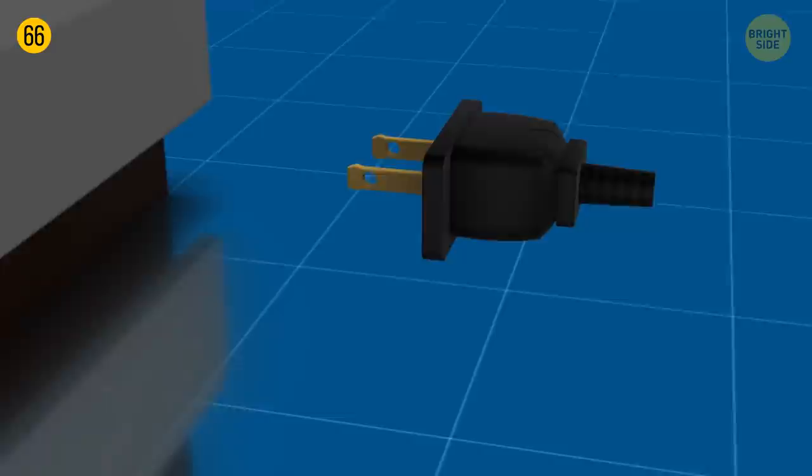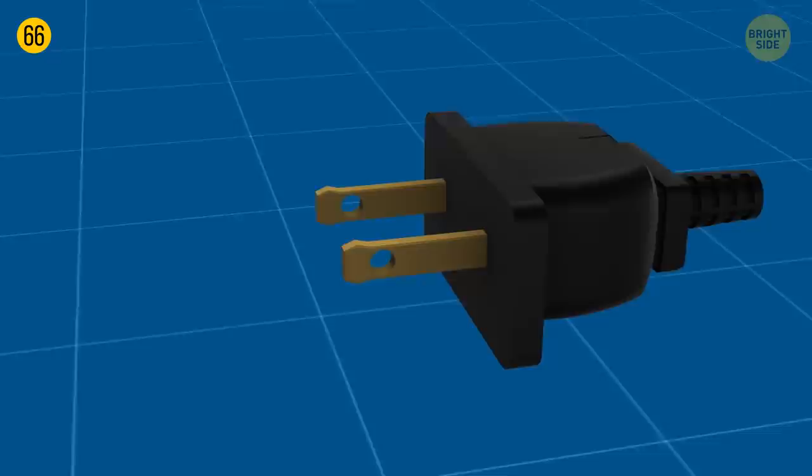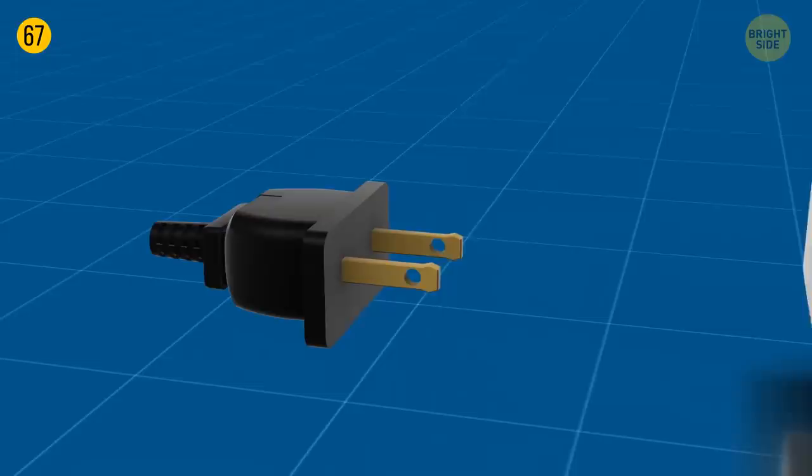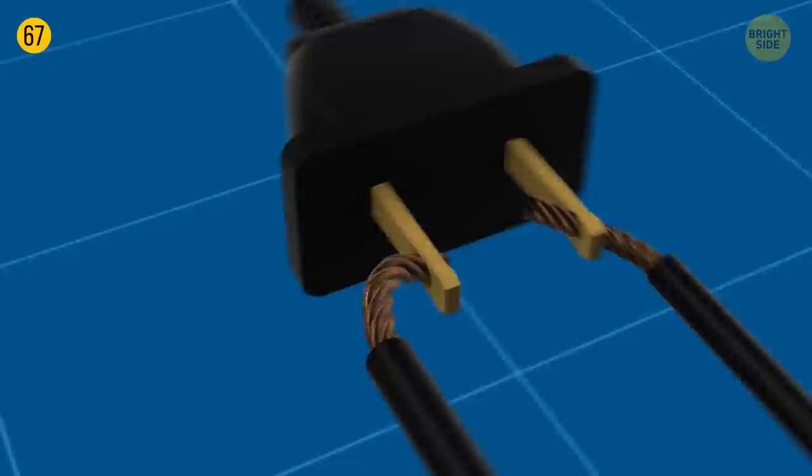Two flat prongs you can see on standard plugs used in North and Central America make sense. But how about those holes near the tips? Thanks to them, the outlet firmly grips the plug so that it won't loosen or fall out of the socket. The second thing about the holes is that they allow you to wire electric power directly to the prongs, so you don't even have to use classical electrical outlets. If you need to get electrical power via direct wires, the holes we got over there make the entire job much easier.